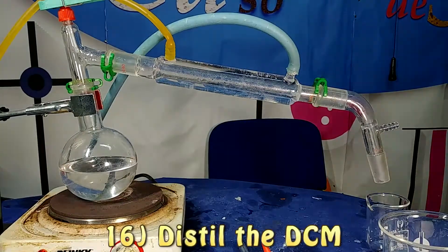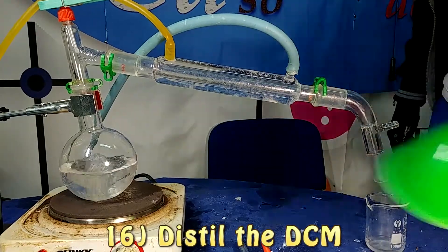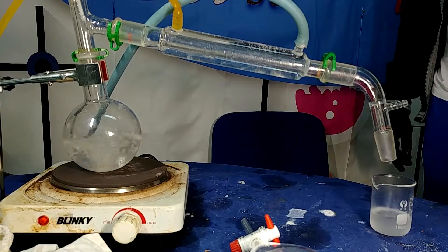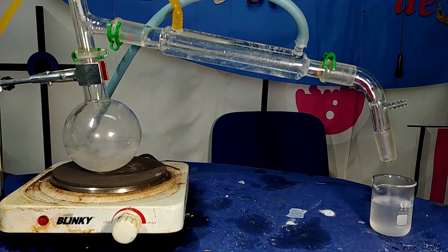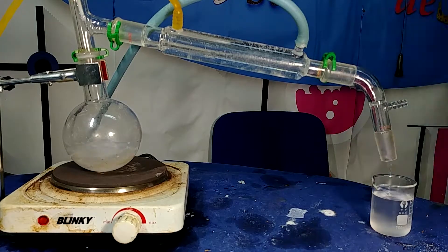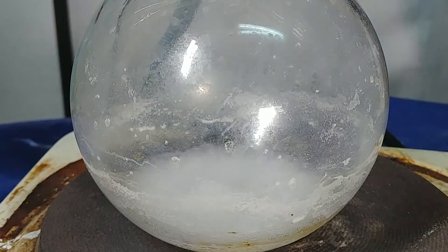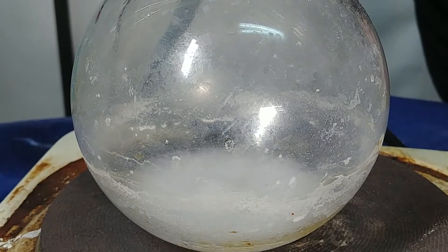After that we are going to take our dichloromethane which contains of course our extract from the cinnamon or cinnamaldehyde. Then we are going to put it in our boiling flask. We are going to boil this solution because firstly we are going to get back our dichloromethane this way and secondly because what remains will be the extract from the cinnamon which is cinnamaldehyde.